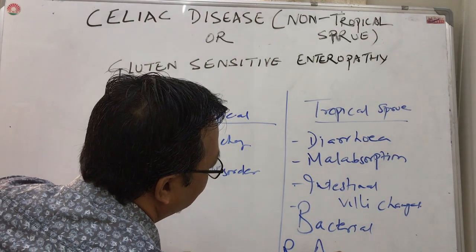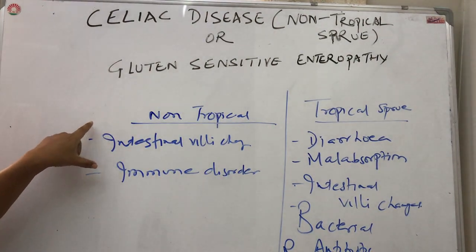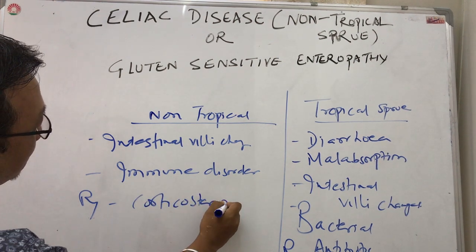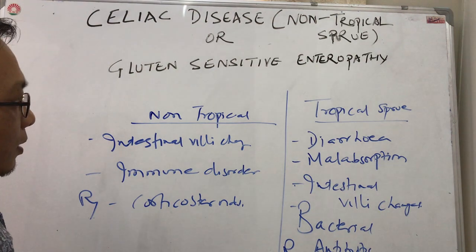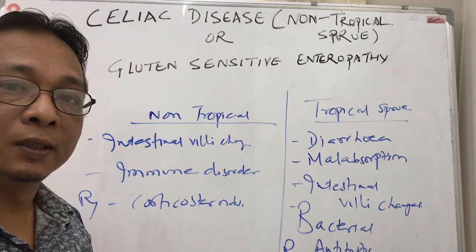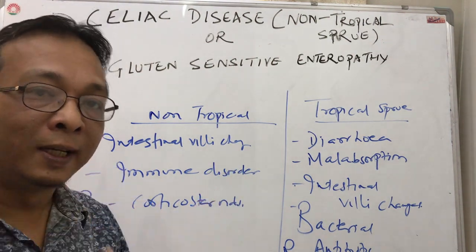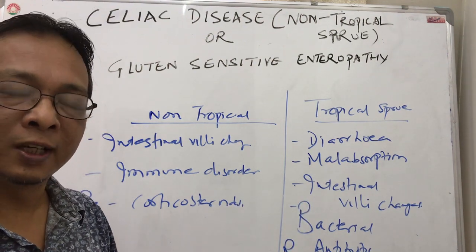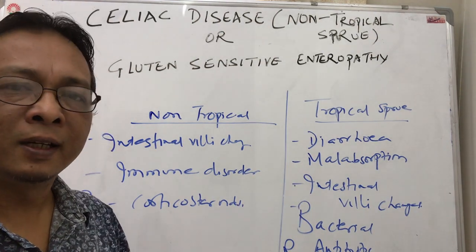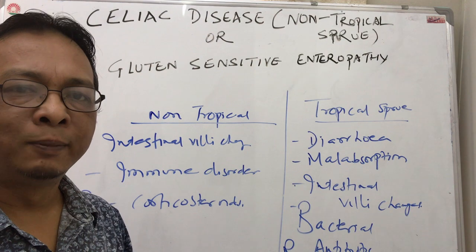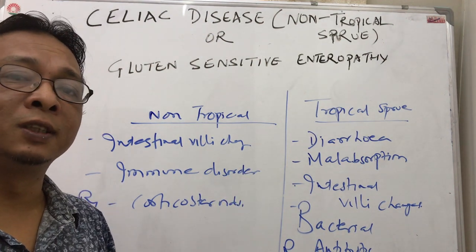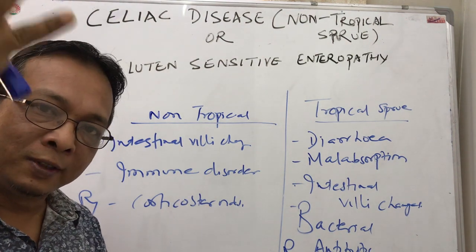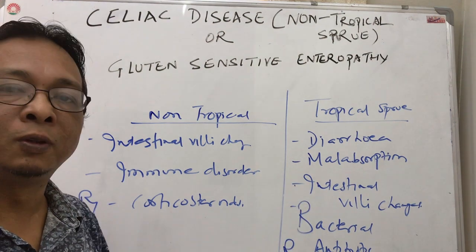Treatment for tropical sprue is antibiotics, whereas for non-tropical sprue the treatment is steroids — around four to six weeks of corticosteroids can heal a celiac disease patient. Tropical sprue affects both native people and expatriates in tropical countries. It has been observed that when expatriates migrate away from those countries, the condition usually heals off within four to six months.